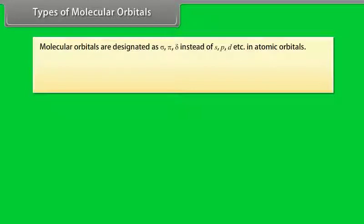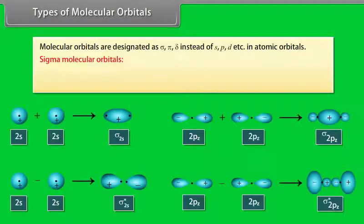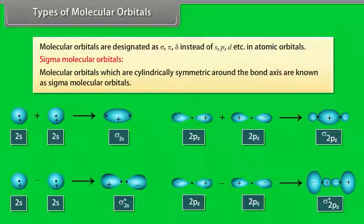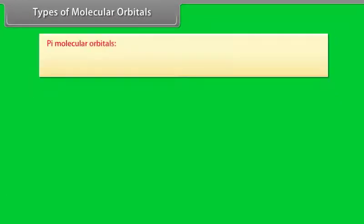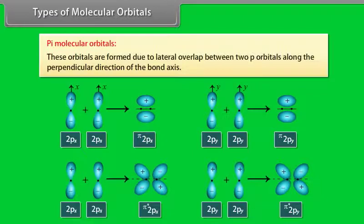Types of Molecular Orbitals: Molecular orbitals are designated as sigma, pi, and delta instead of s, p, d in atomic orbitals. Sigma molecular orbitals are cylindrically symmetric around the bond axis. Pi molecular orbitals are formed due to lateral overlap between two p-orbitals along the perpendicular direction of the bond axis.